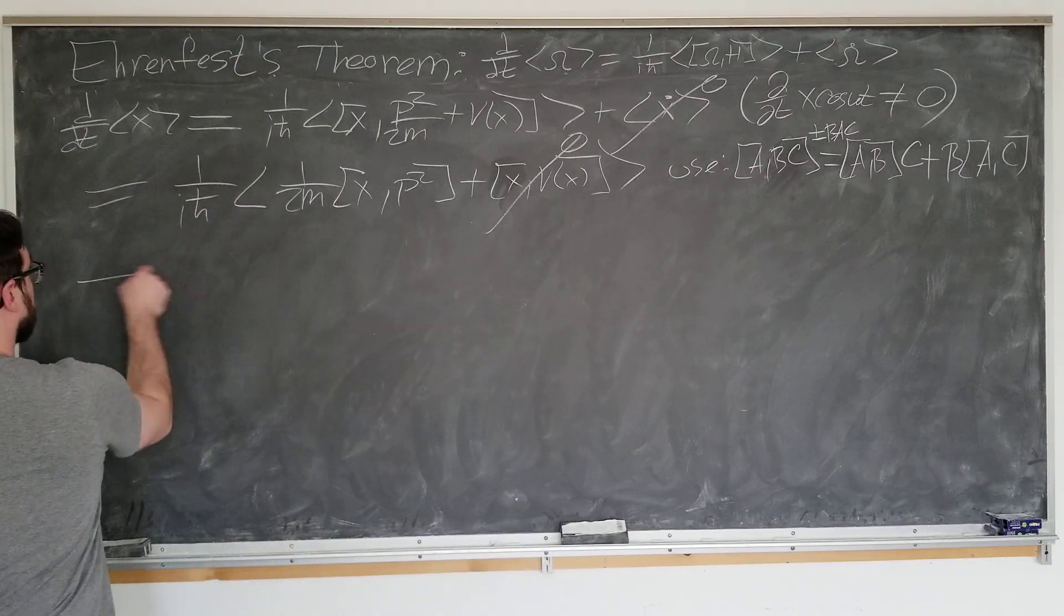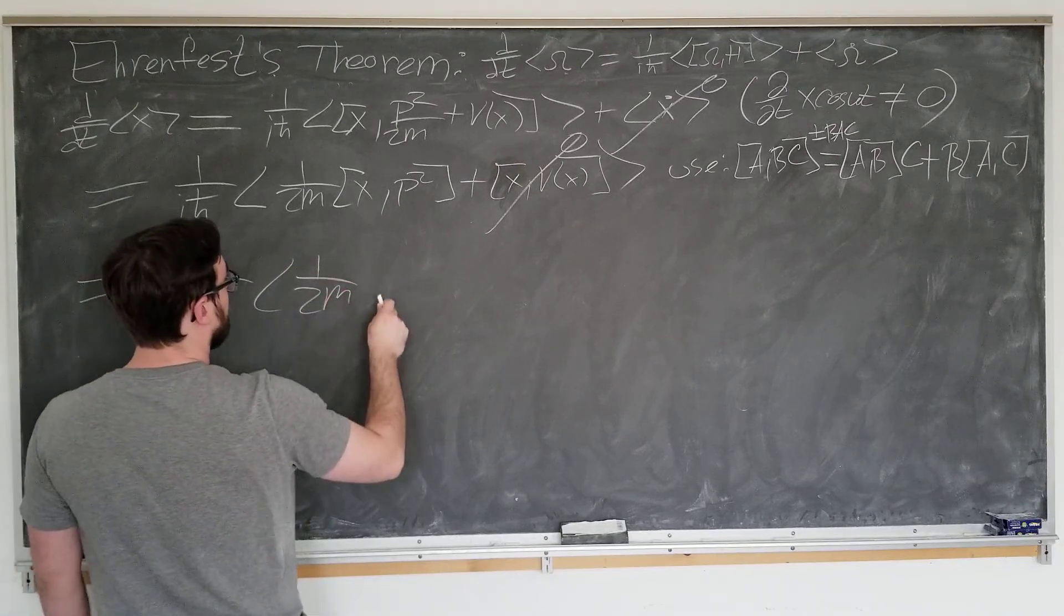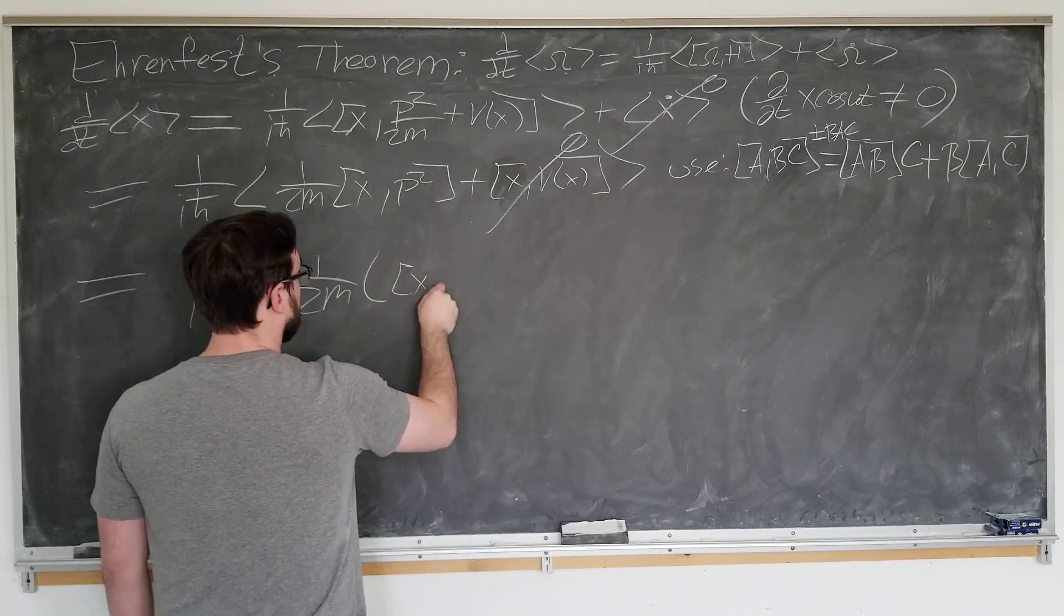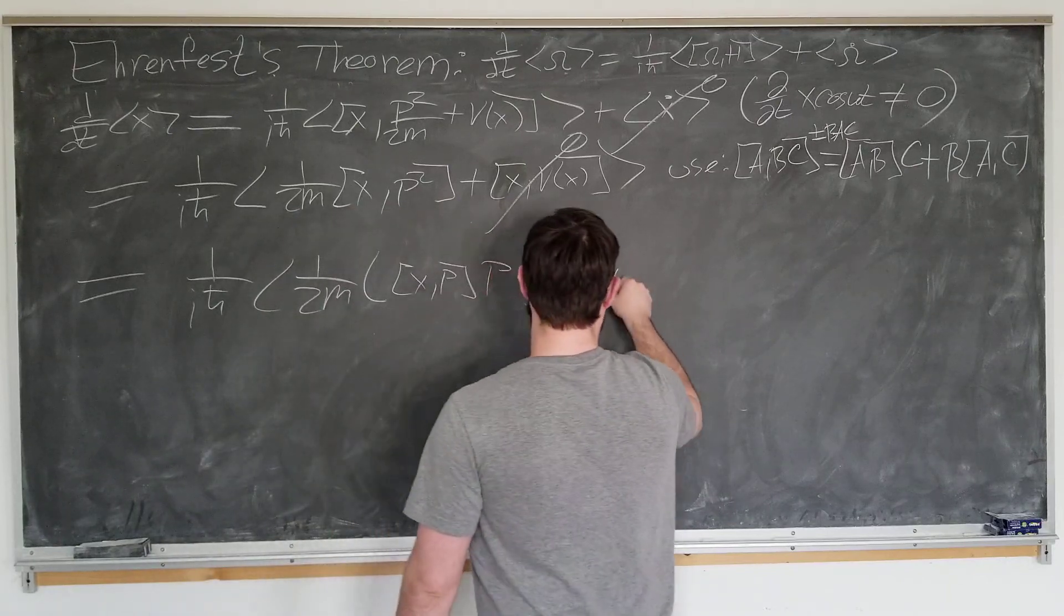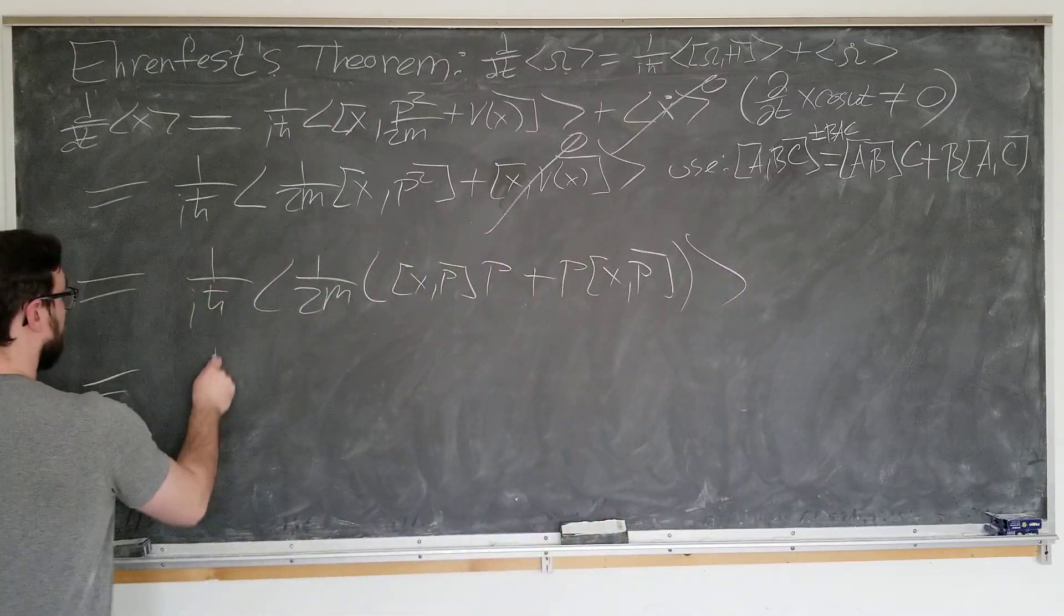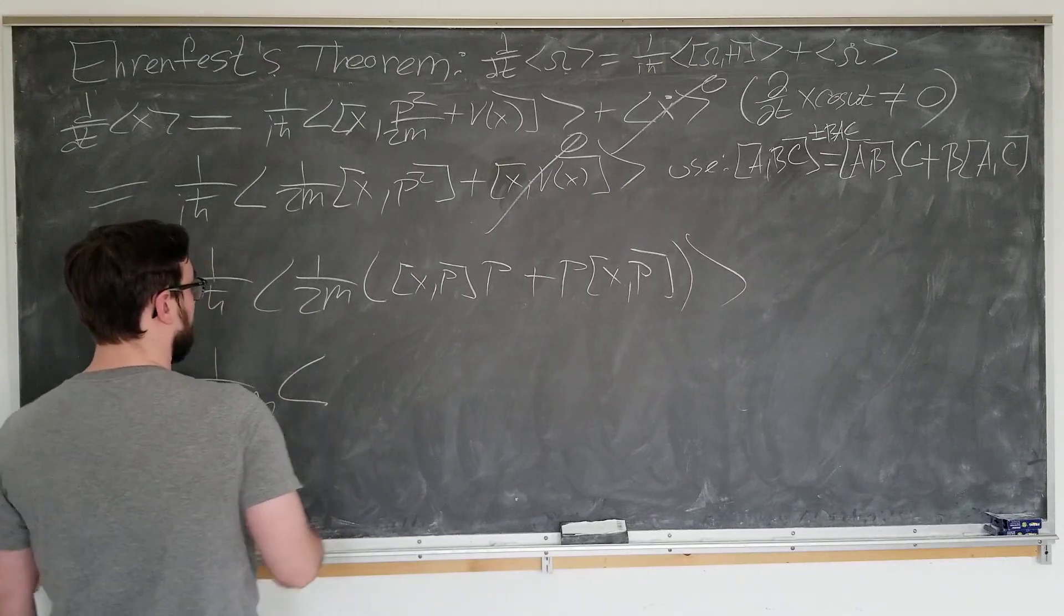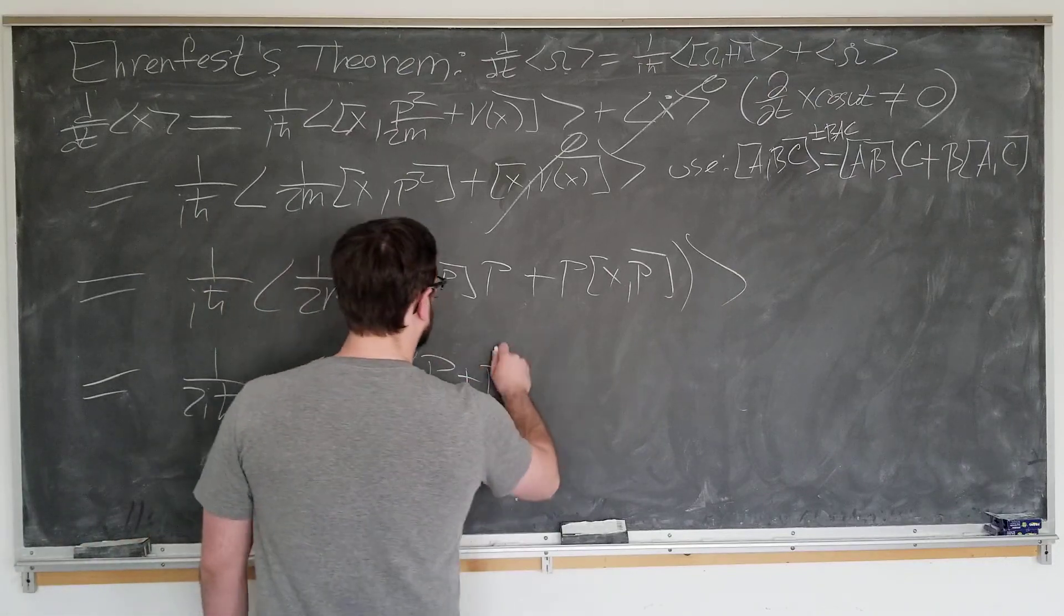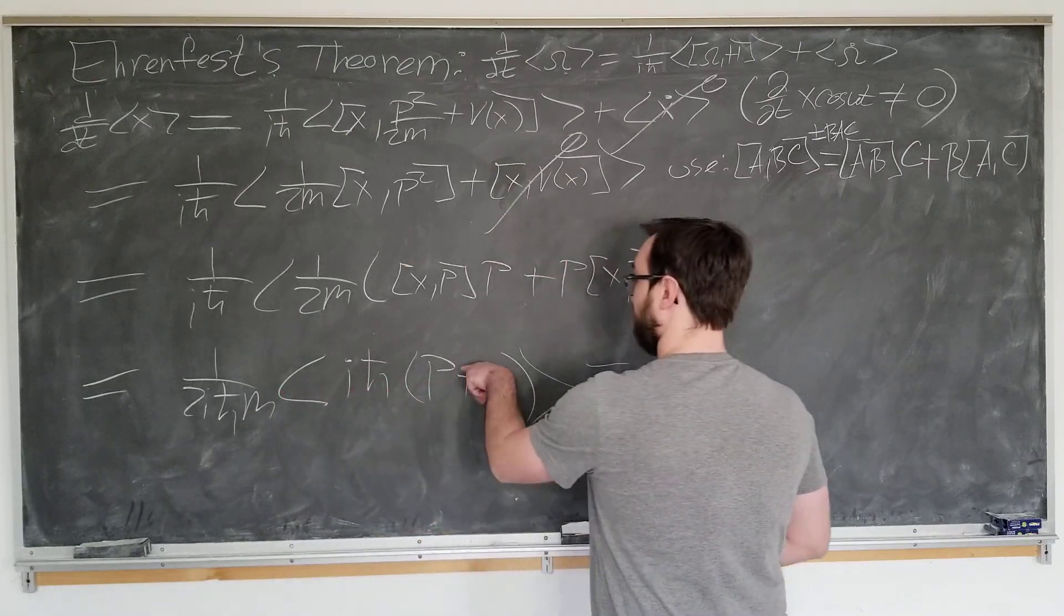It becomes one over i h bar, one over 2m, then we have x with p times p plus p, x with p. Notice x with p factors out, we have evaluated before anyways. 1 over 2i h bar m, expectation value of i h bar, we talked about this, p plus p, which becomes h bar cancel, this becomes 2p.